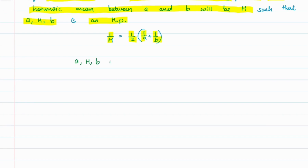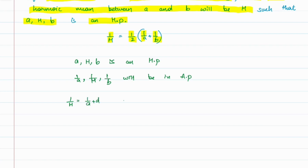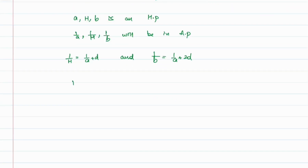Since a, H, b is an HP, the sequence of reciprocals will be in AP. So 1/a, 1/H, 1/b will be in AP. If d is the common difference of this AP, then 1/H equals 1/a + d, and 1/b equals 1/a + 2d.